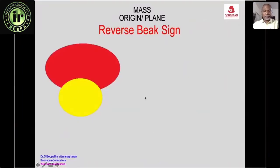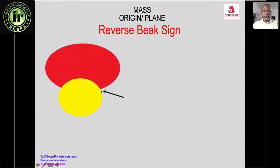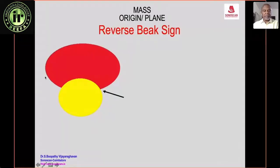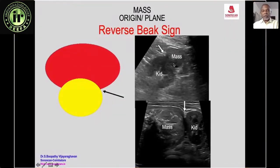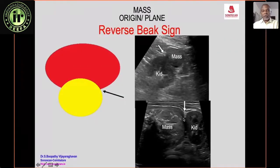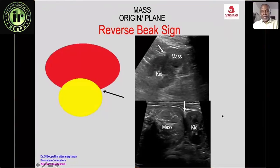The reverse beak sign: the organ and mass are seen together, but a groove is visible between them. This suggests the mass is not arising from the organ — they are close but the mass has a separate origin. An example is a ganglioneuroma of the retroperitoneum anterior to the kidney showing the reverse beak sign.